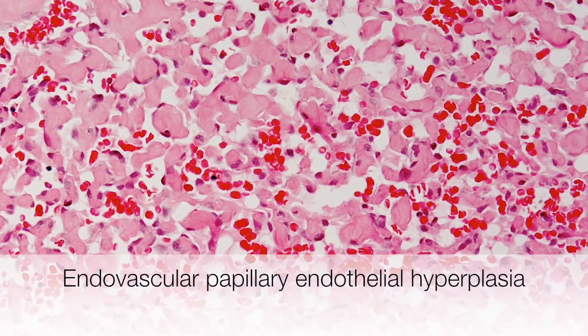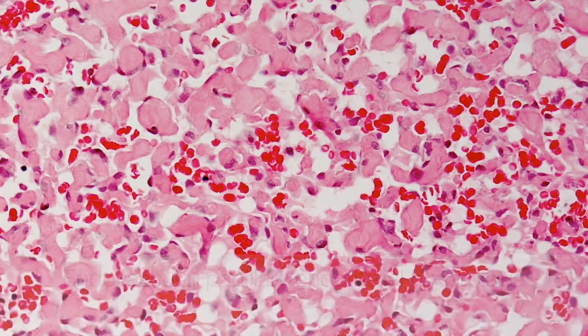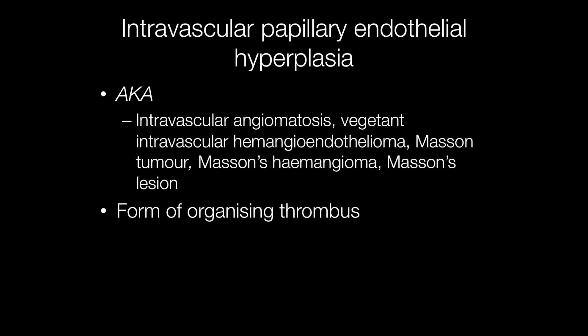This is an example of endovascular papillary endothelial hyperplasia. Alternative names for the lesion include intravascular angiomatosis, which was the original term that Masson gave it when he described it in haemorrhoidal tissue. Other names include Masson tumour, Masson's haemangioma, and Masson's lesion.